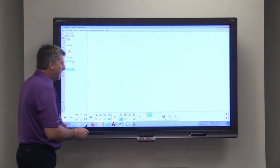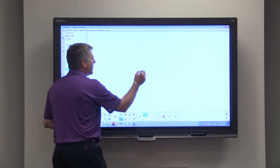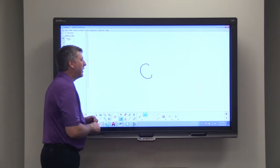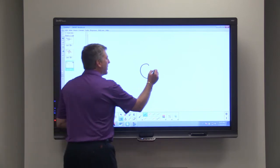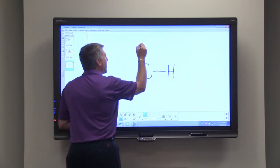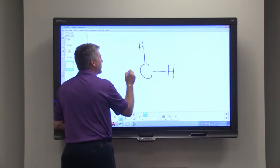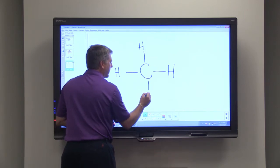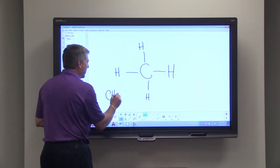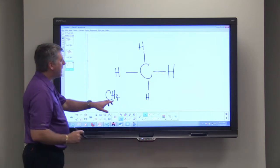Now one thing that we can do to show some structural formulas for carbon is we can let a line represent a shared pair of electrons. So here's another way of representing CH4, which is methane.